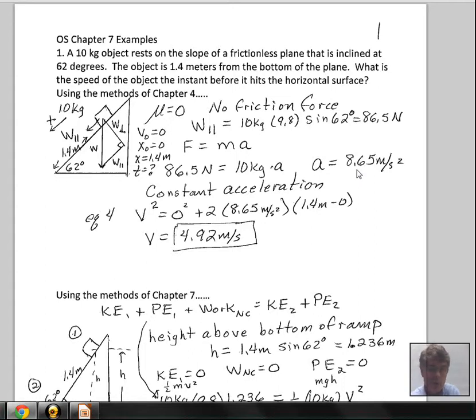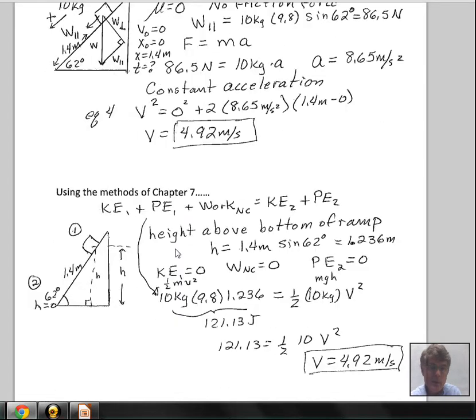So choosing equation four—I do so because I do not know the time to get down to the bottom of the plane—we want to know this speed at the bottom. The initial speed was zero when we're released. We use two times acceleration, and working with the positive direction going down the plane, 1.4 meters of travel. Start the position at zero. You should calculate this on your own. I came up with 4.92 meters per second at the bottom.